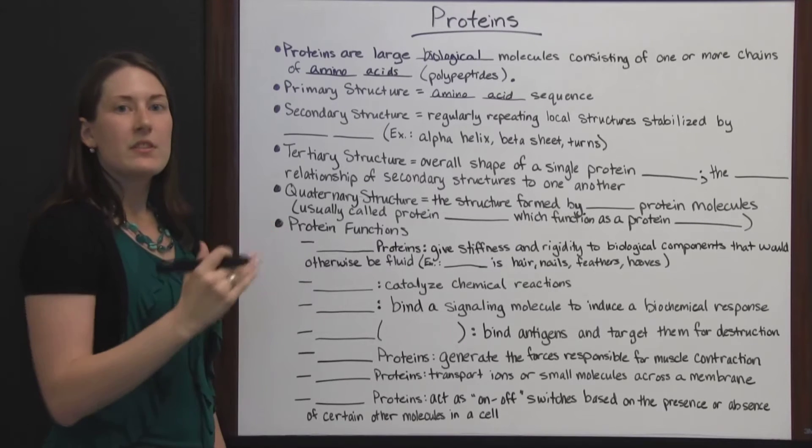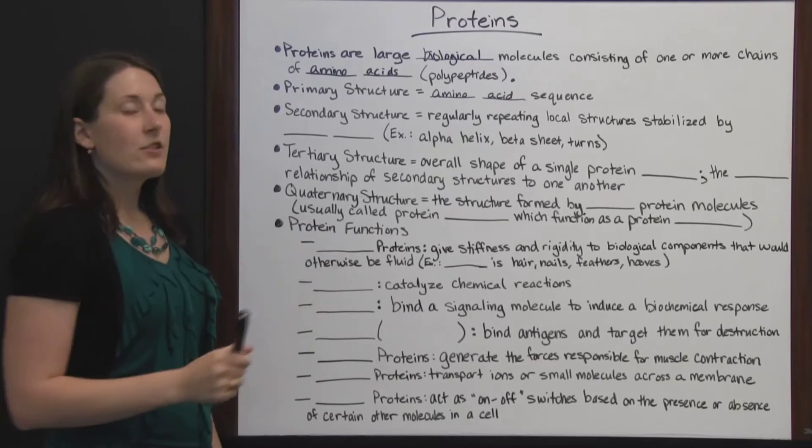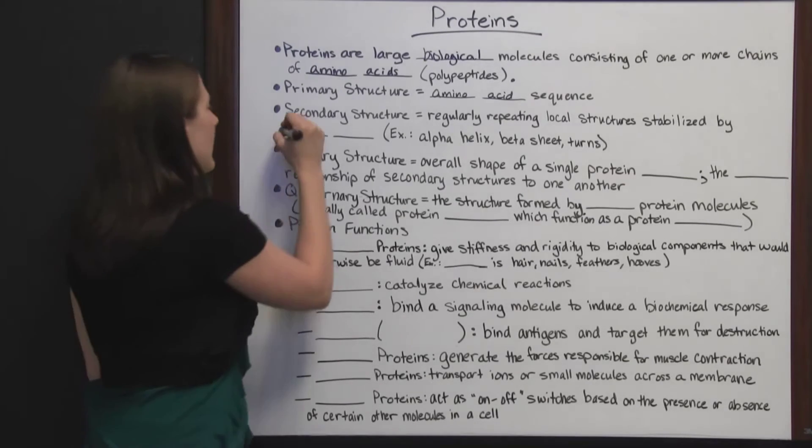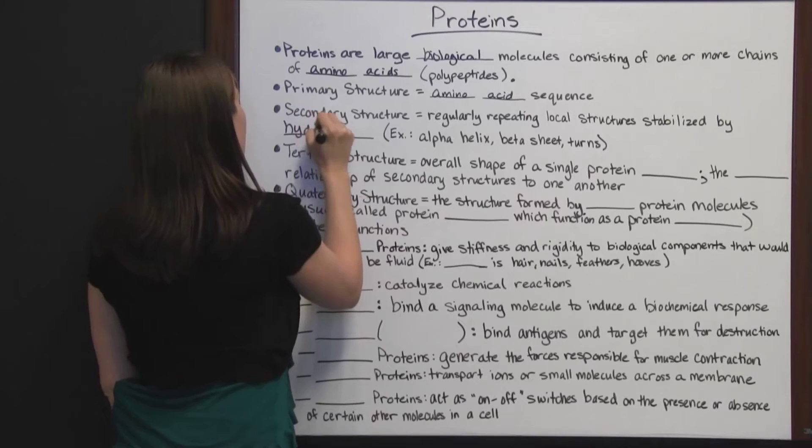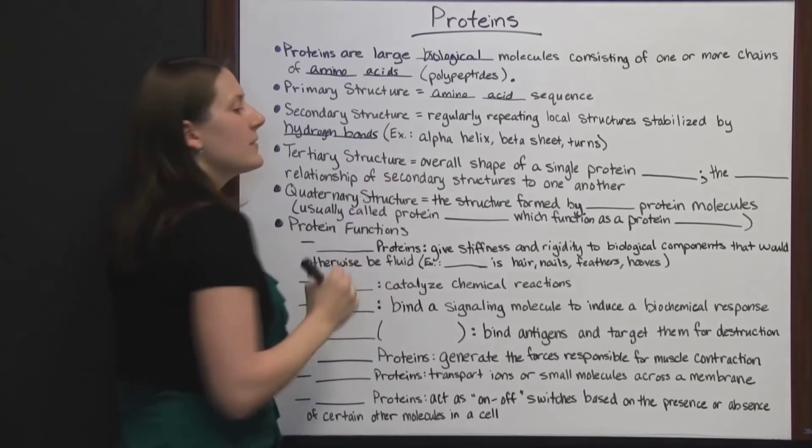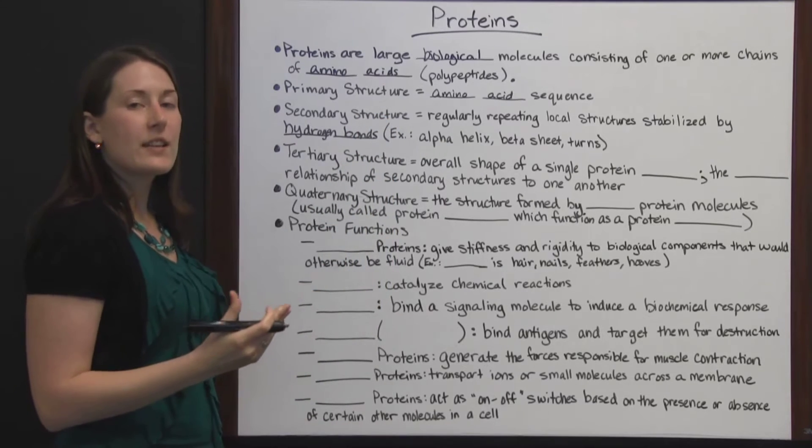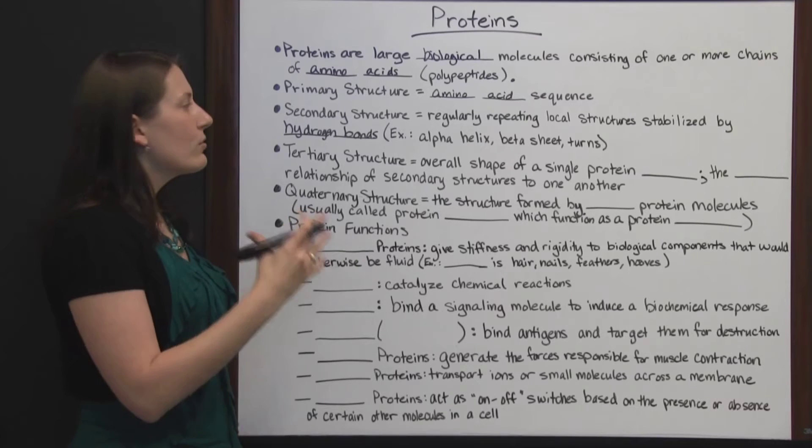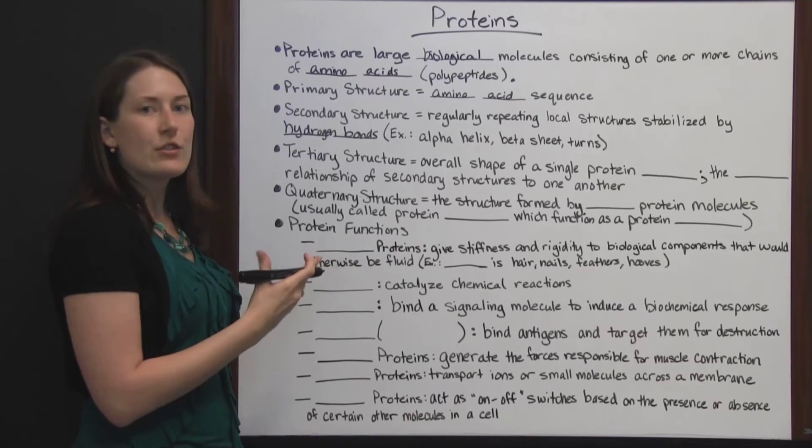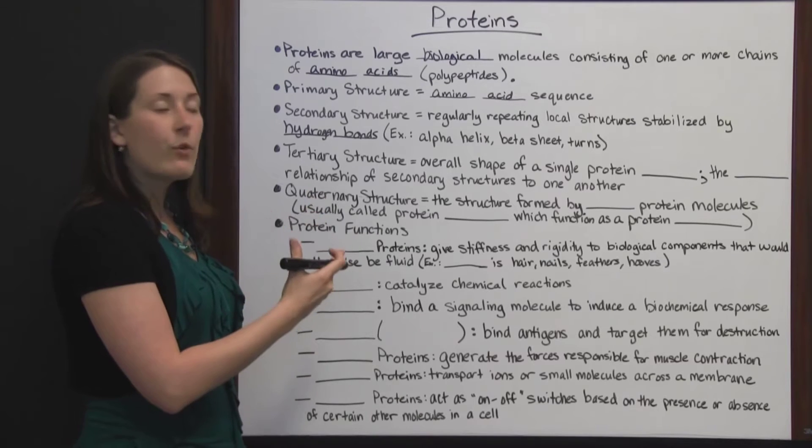The secondary structure is the regularly repeating local structures stabilized by hydrogen bonds. This is whenever we've got a few proteins interacting together, and the local structures, or the regular structures that these proteins will form, just all on their own without any help.